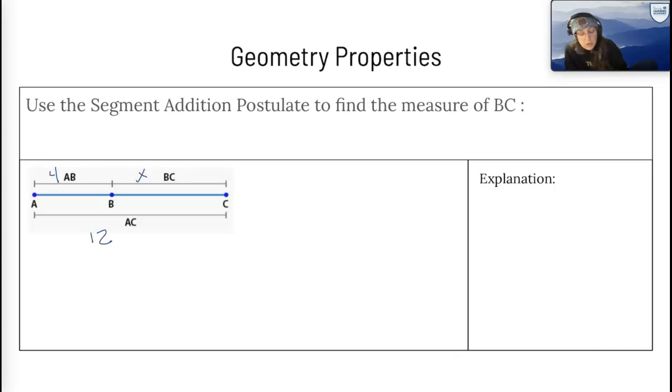So use the segment addition postulate to find the measure of BC. Do you remember? Check your notes. Did you write it down on your guided notes? What is total space? The segment addition postulate says AB plus BC equals AC. So let's write that down. AB plus BC equals AC.